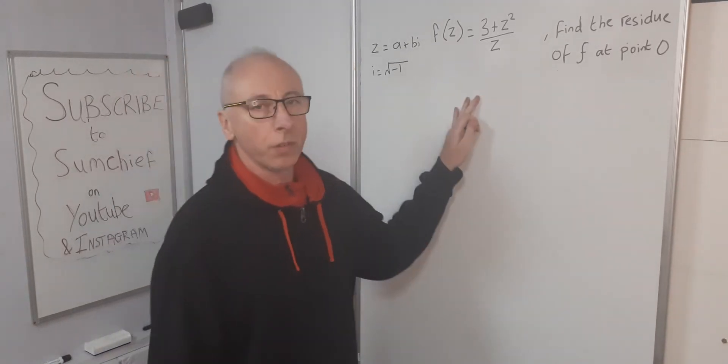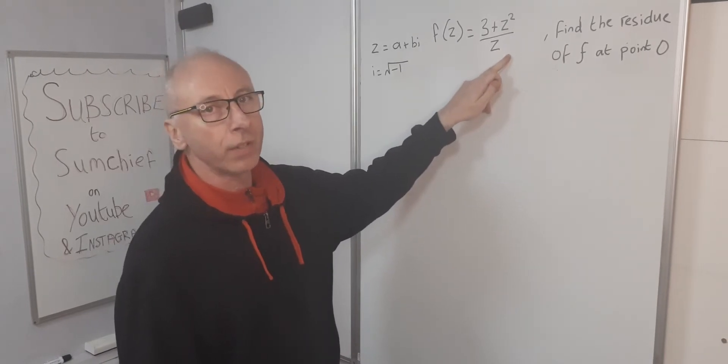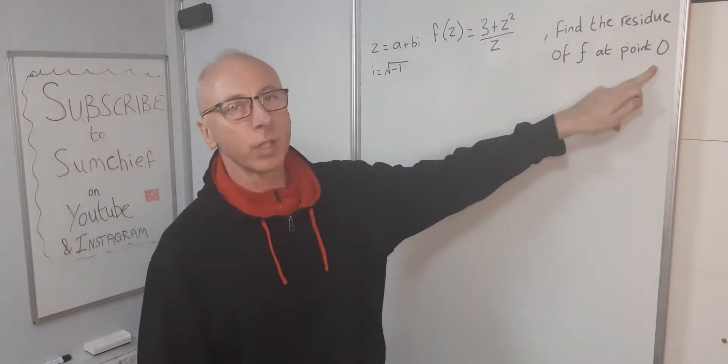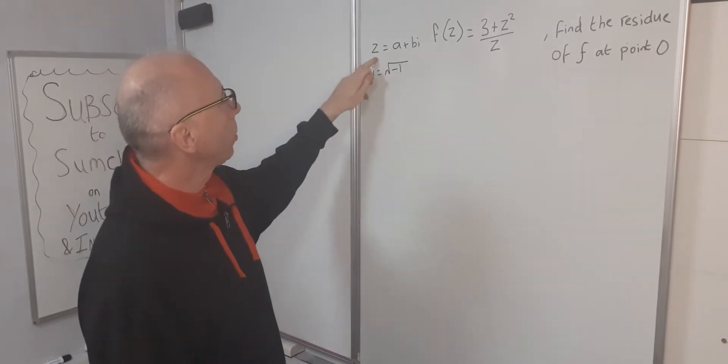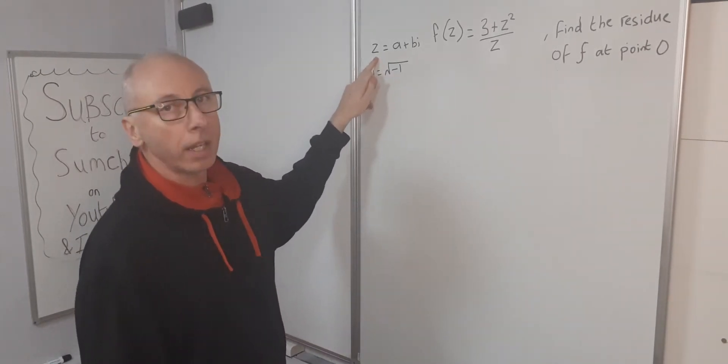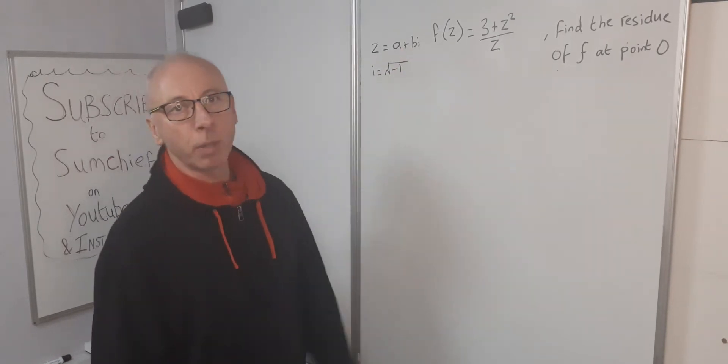In this video, we're going to find the residue of the function (3 + z²)/z at the point 0. We're dealing with complex analysis, so all the usual rules apply. z is a complex number which is a + bi, where i is the square root of -1.